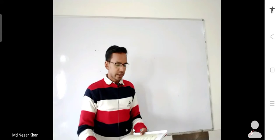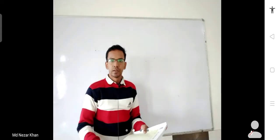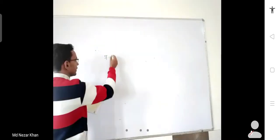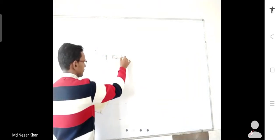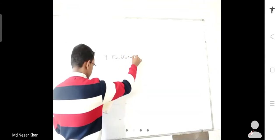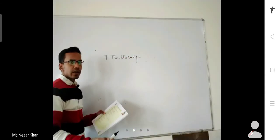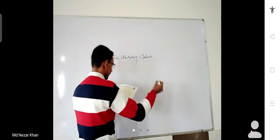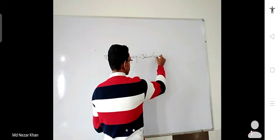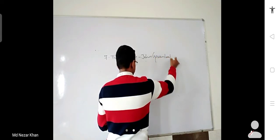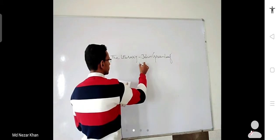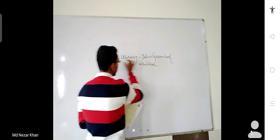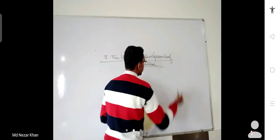Good morning everyone, 7th standard students. We are going to study lesson 7, and the name is Dar Albany. This poem is written by John Greenleaf Whittier.